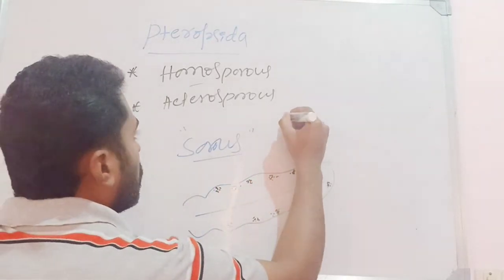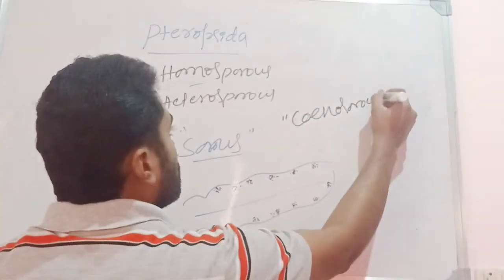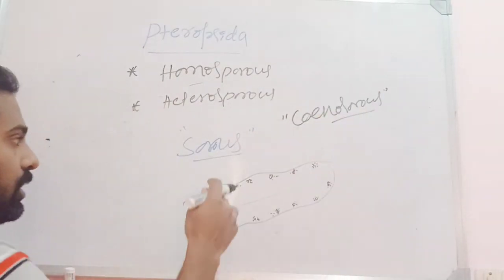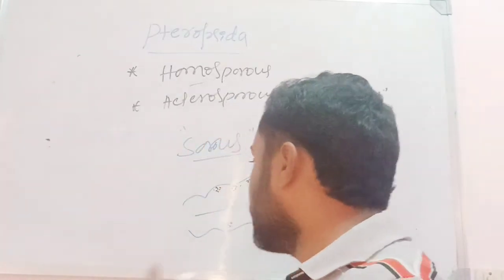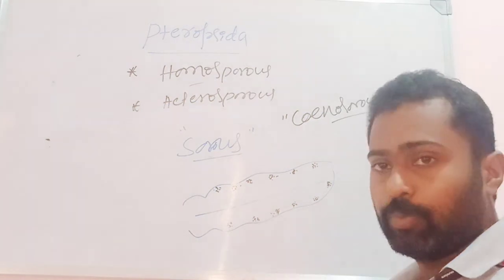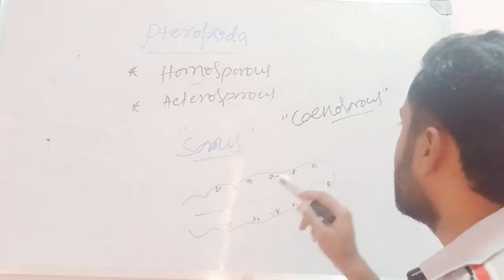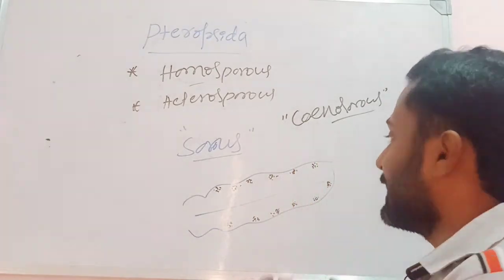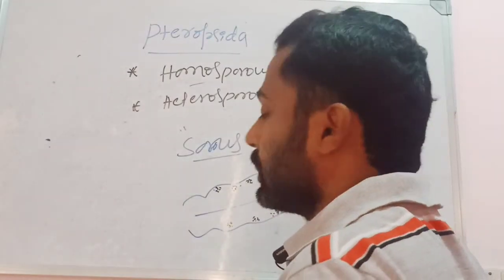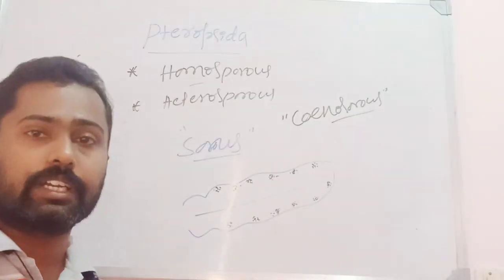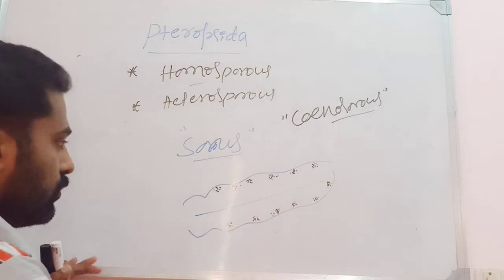The condition where sporangia are born along the ventral side of the leaf along the margin in groups is called the cenosorus condition. This can be seen in members of the ferns.